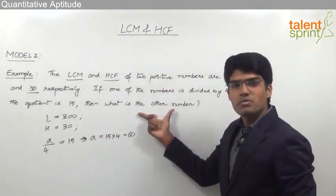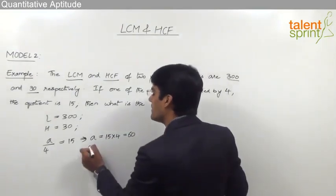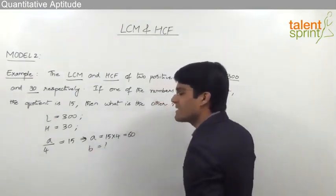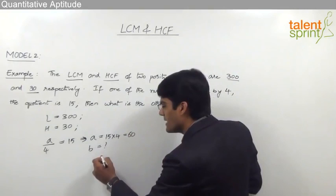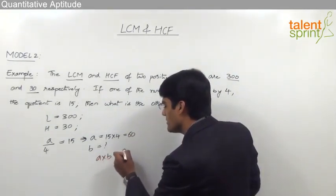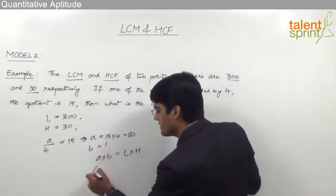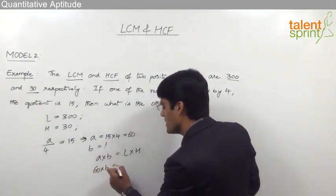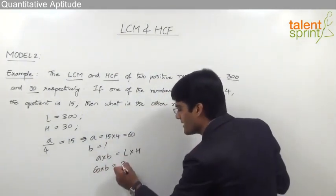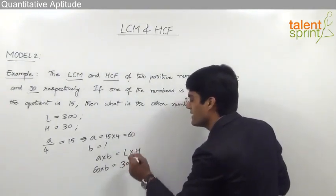Then what is the other number? So we are supposed to find out the other number B. Let us take it as B. Now as discussed here, we know that A into B should always be equal to L into H. So A is nothing but 60 into B should be equal to the LCM is 300 into HCF is 30.